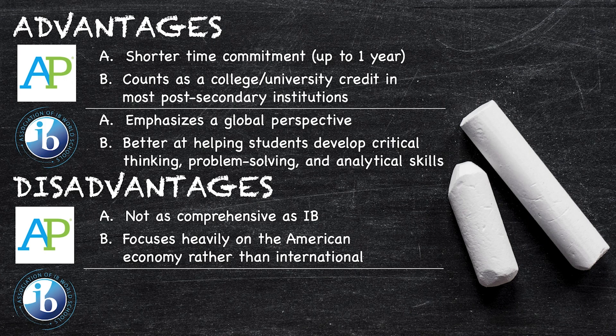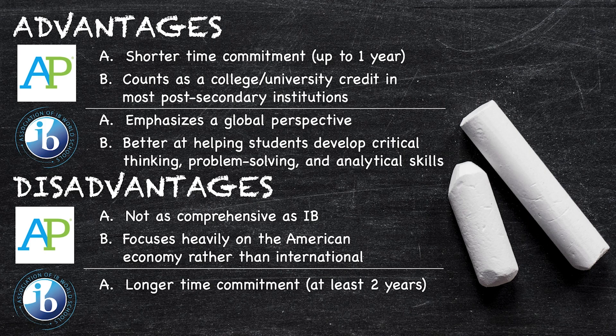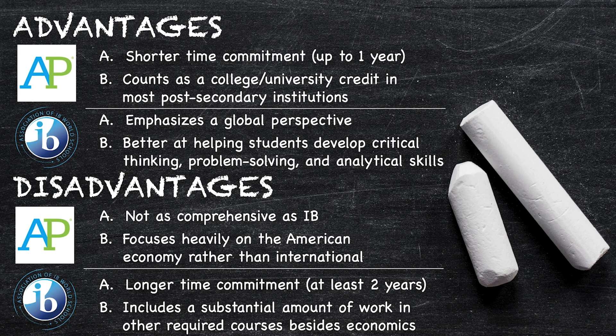However, just like the AP program, IB Economics has its drawbacks. Most notably, one of the disadvantages of IB Economics is that it's a longer and more challenging program. It requires students to take both microeconomics and macroeconomics along with other required courses in language, mathematics, science, and the arts. It also includes an extended essay and a Creativity, Action, and Service — or CAS — component, which can be very time-consuming and require a lot of work.